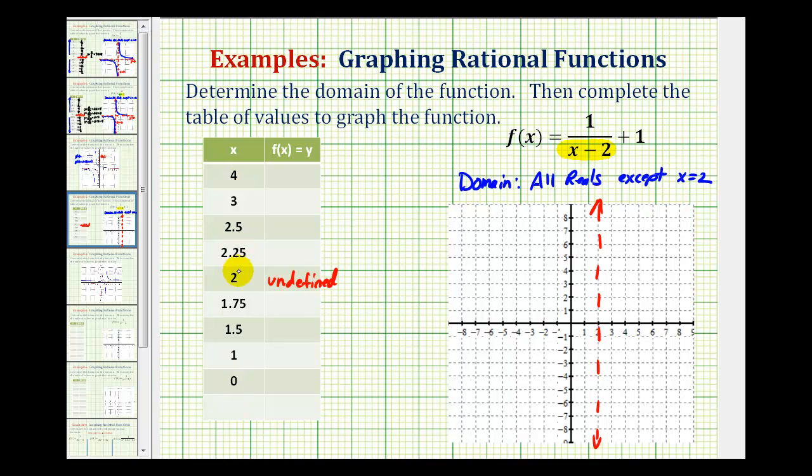And it's always helpful to select an x value that's just a little bit greater than two. For example, here we selected 2.25 and then increasing values of x. And then for a value that's just less than two, we selected 1.75 and then decreasing values of x. Now we'll complete this table by performing substitution into our function.